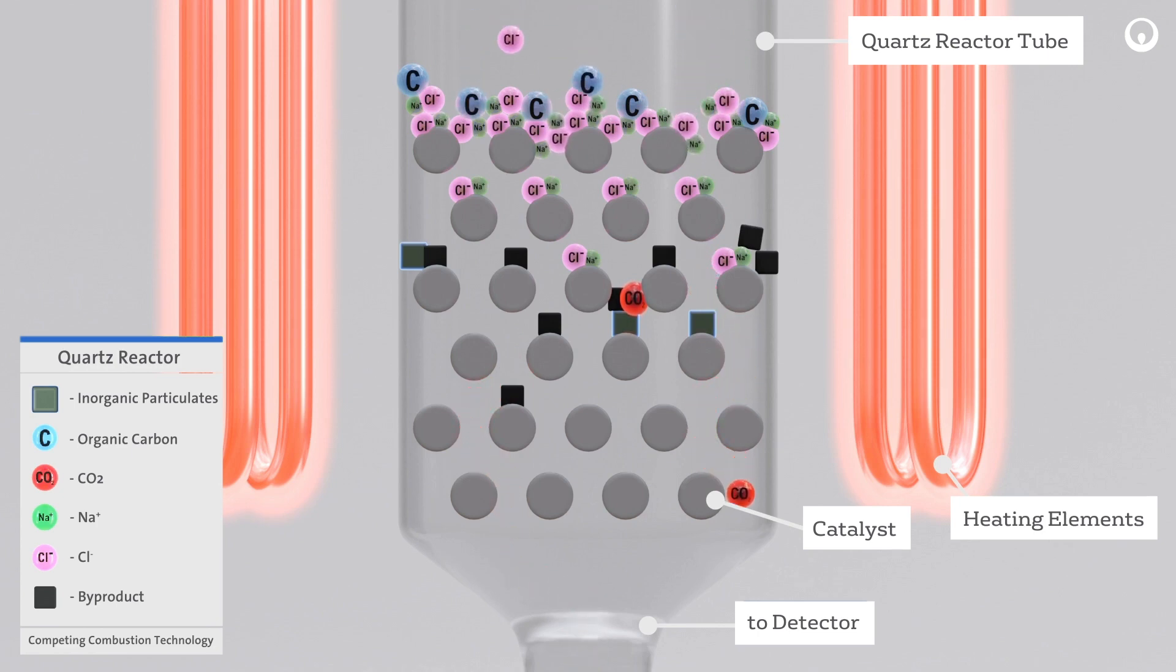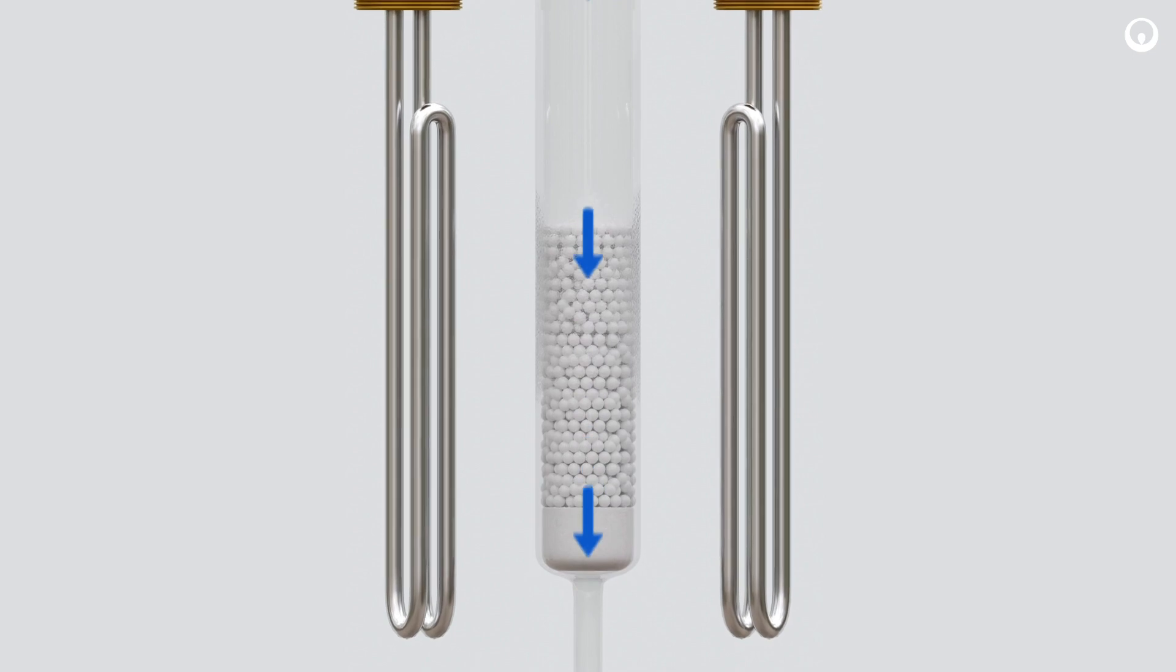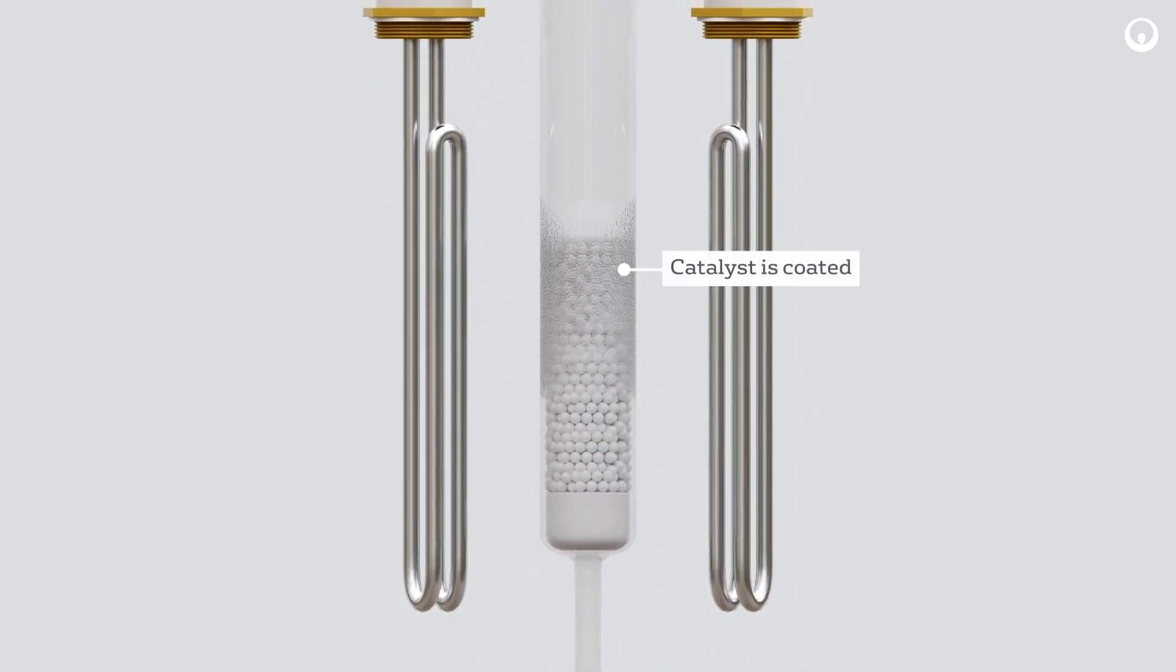The salts begin to attack the quartz reactor and cause de-vitrification, which will ultimately cause the reactor tube to crack. The remaining particulates and combustion byproducts will begin to restrict the gas flow path and coat the catalyst. When the catalyst is partially coated, the efficiency to oxidize the sample is severely reduced and recalibration is necessary.